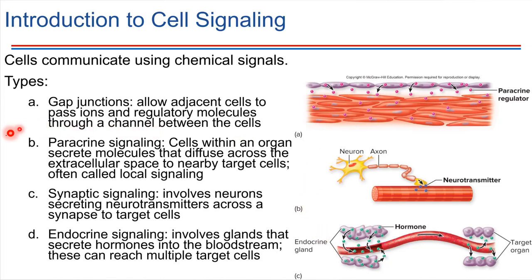Paracrine signaling is a type of signaling that involves cells that are nearby but perhaps not in direct contact with each other — maybe just in the same vicinity. One cell secretes a molecule, and diffusion is sufficient to carry that molecule through the extracellular spaces to a target cell not too far away. This is often called local signaling, and it happens frequently within a given organ.